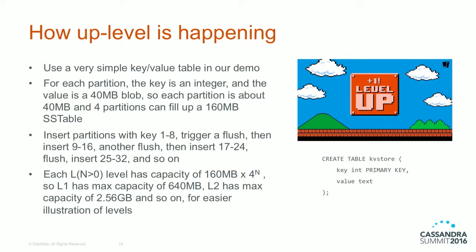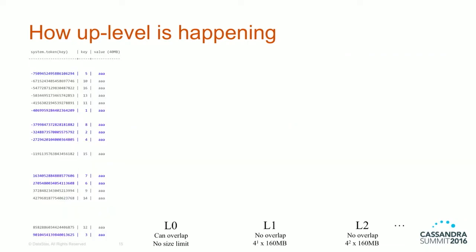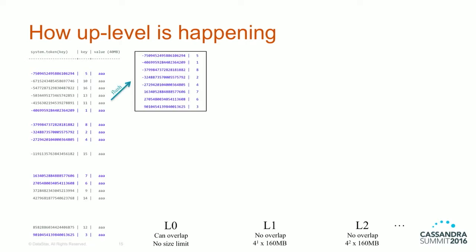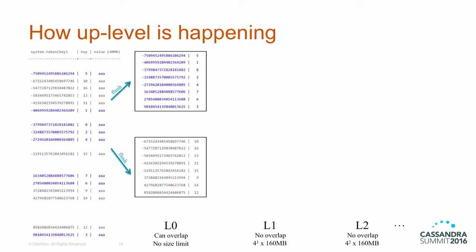As a note: you may wonder why I'm only showing four SSTables at Level 1 and sixteen at Level 2 — the reason is I don't have enough pixels to show a hundred SSTables at Level 2, so I've simplified the illustration. The blue color represents my first batch of data, partitions 1 to 8. Flushing that generates a blue SSTable on L0; flushing partitions 9 to 16 generates another SSTable also on Level 0. They are sorted by token value, and you can see the two colors are intermixed — they are overlapping.